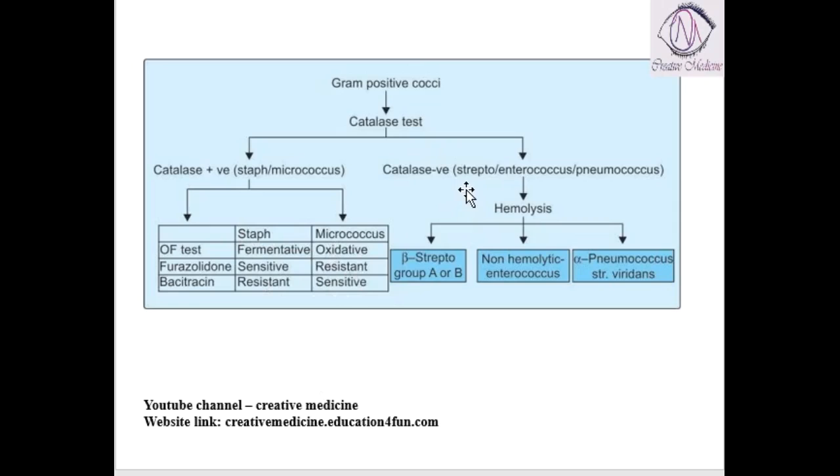Then, if the organism is catalase negative, then it is either streptococcus, enterococcus and pneumococcus. So, for streptococcus, enterococcus and pneumococcus, we should do hemolysis.